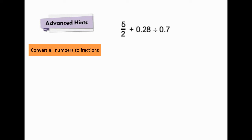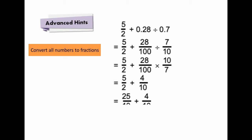In this example, we convert the two decimals into fractions first. 0.28 becomes 28 over 100, and 0.7 becomes 7 over 10. Dividing by 7 over 10 becomes multiplying by 10 over 7. After simplification, we get the final answer, 29 over 10.